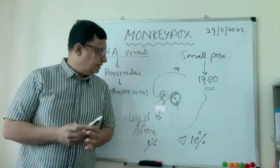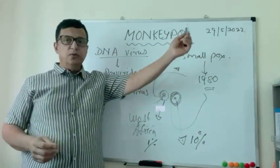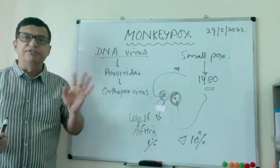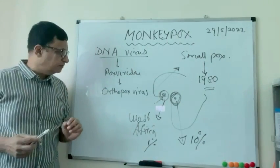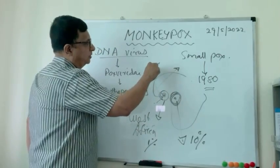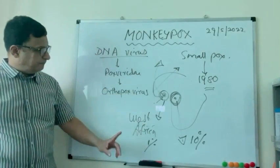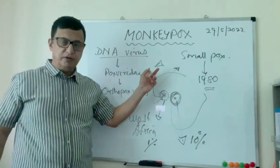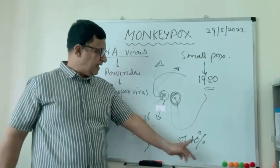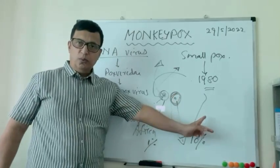Unfortunately, the clade spreading across approximately 15 countries worldwide these days is the West African clade of monkeypox, which is not as dangerous as the central Congo variety.